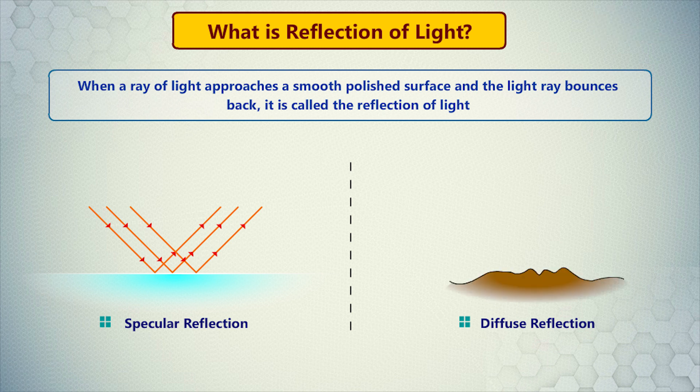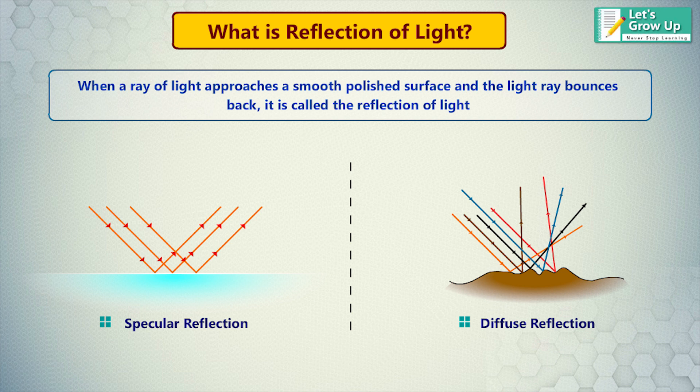Diffuse reflection. When a parallel beam of incident light is reflected in different directions, it is called diffuse reflection or irregular reflection. In this case, the parallel incident rays do not remain parallel after reflection, they are scattered in different directions.